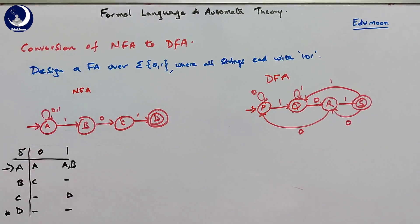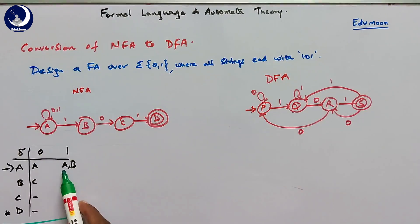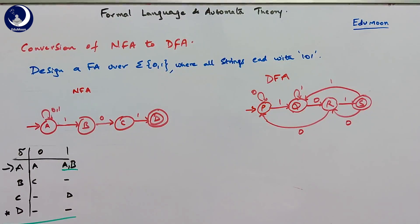This is the transition table for the given NFA. You can clearly see that a state on a symbol goes to more than one state — that is clearly an NFA. We will now convert this NFA into a DFA directly using the table.